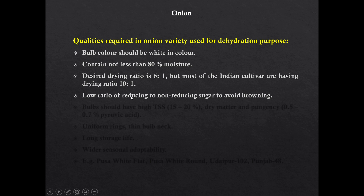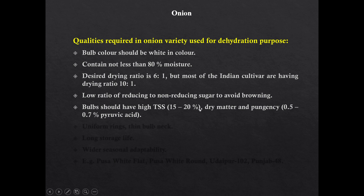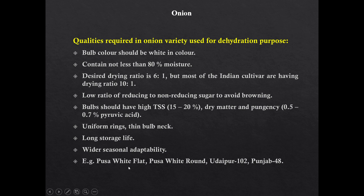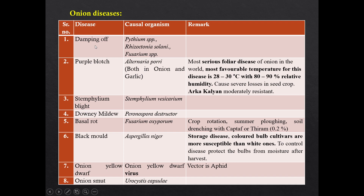Qualities of onion required for dehydration: Bulb color should be white and bulb moisture should not be less than 80%. The desired drying ratio for dehydration is 6:1, but in most Indian cultivars the drying ratio is 10:1. A low ratio of reducing to non-reducing sugar is good — it prevents browning. Bulb should have high TSS, high dry matter and pungency. Bulb should have uniform rings, thin bulb neck, long storage life, and the cultivar should have wider seasonal adaptability. Cultivars suitable for dehydration are Pusa White Flag, Pusa White Round, Udaipur 102, and Punjab 48.